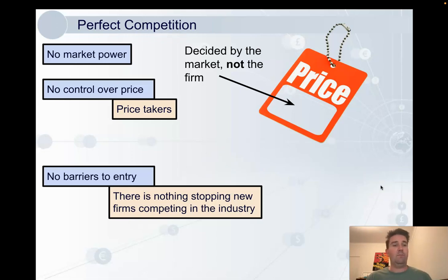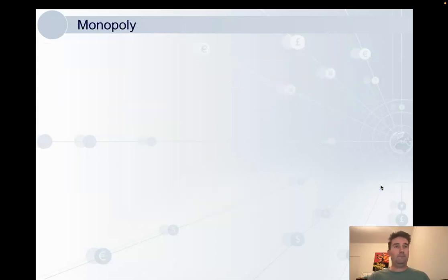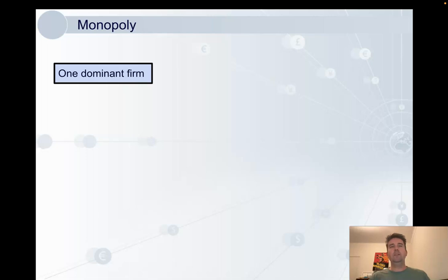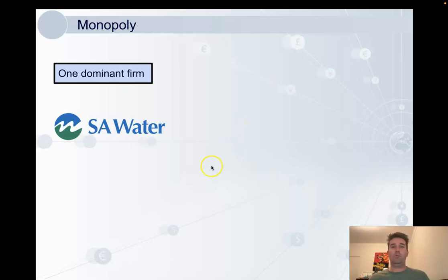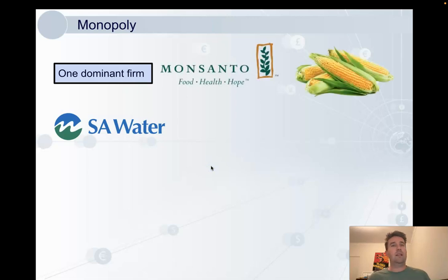That's what we need to know for now about perfect competition. Now monopoly — we all have the idea of a monopoly being one firm in an industry in its purest sense. This would be an organization like SA Water, the only firm in South Australia that provides water distribution services. But one dominant firm in an industry can also be a monopoly. For example, in the market for genetically modified corn, Monsanto controls over 80% of the market, so it's still considered a monopoly because they are that dominant.